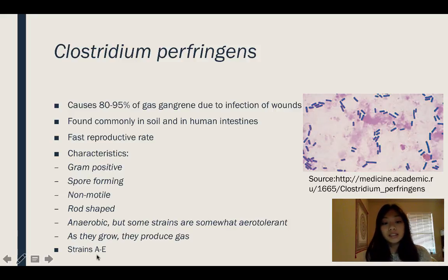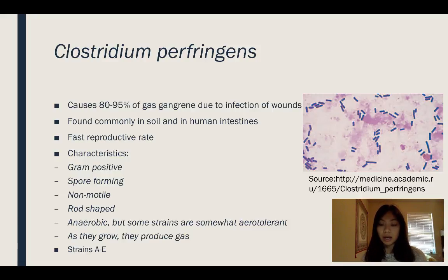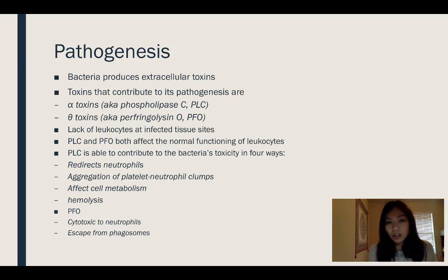There are different strains of Clostridium perfringens, classified as strains A through E. Strain A is usually what infects humans, and strains B through E infect other animals — and they don't necessarily cause gas gangrene in animals; they can cause different types of diseases. These different strains emit different exotoxins. There is still a lot of research going on about exactly how this bacteria is pathogenic, but researchers have come to the consensus that the bacteria attributes its pathogenesis to the toxins it emits.